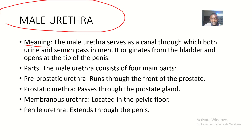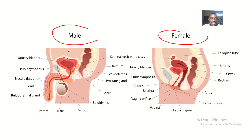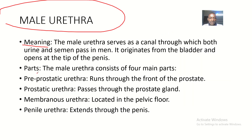So now you can see that in males, if you want to ejaculate, semen comes through the urethra, and if you want to urinate, urine also comes through the urethra. So what are the parts of the male urethra?